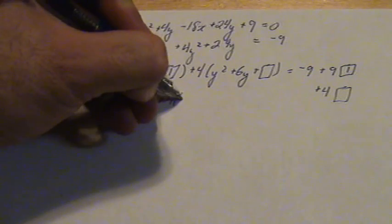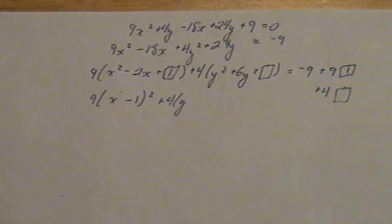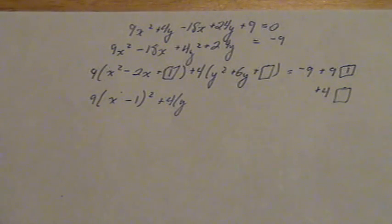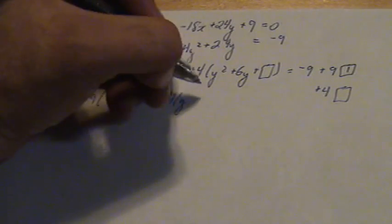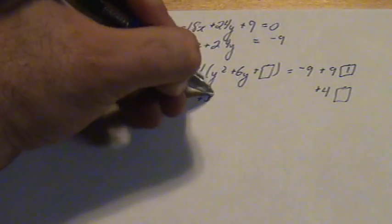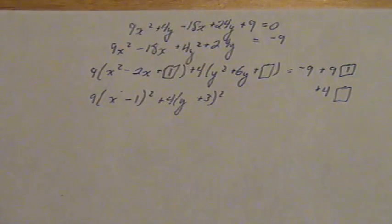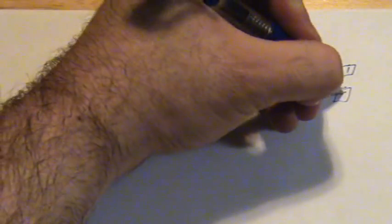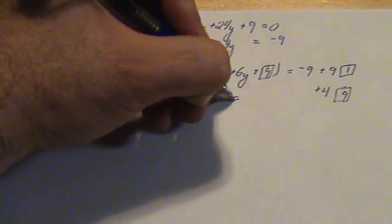9 plus 4 times, what's half of that positive 6? That's positive 3. Square the 3 and we get a 9 in this box and a 9 in this box equals.